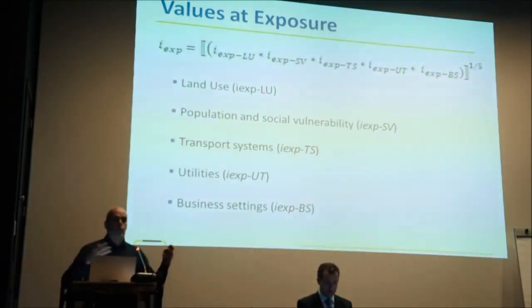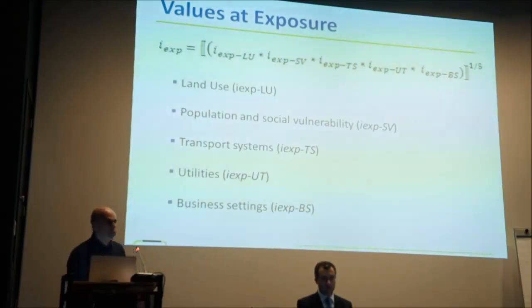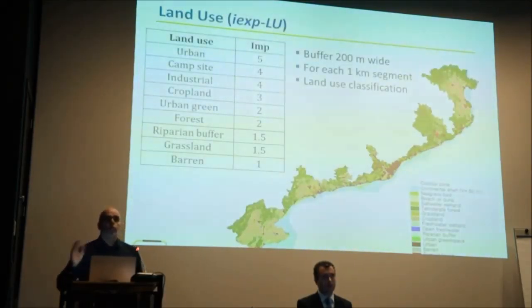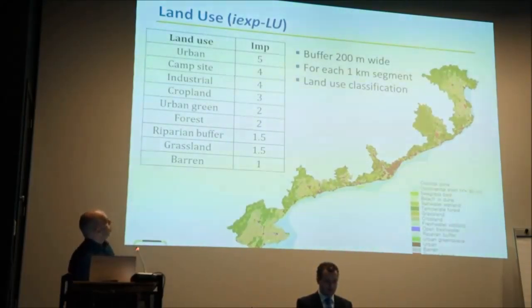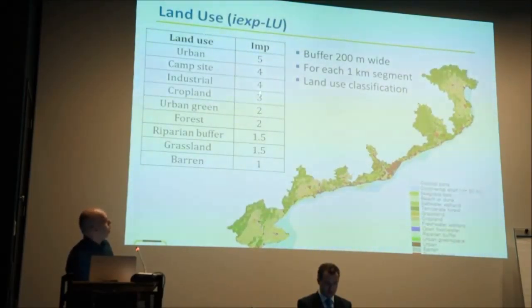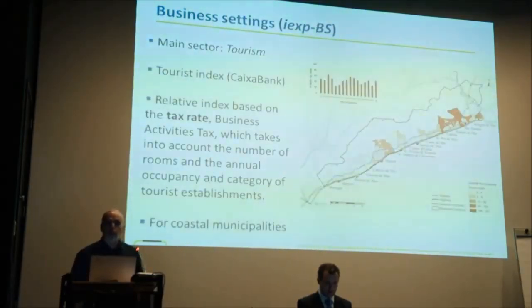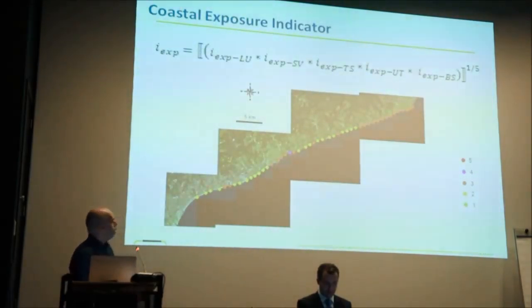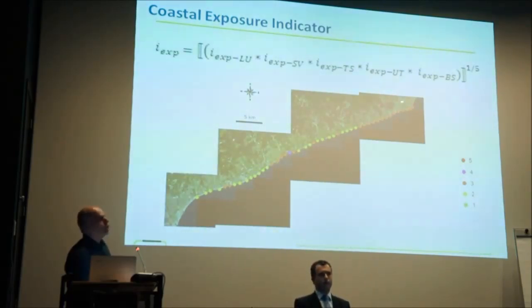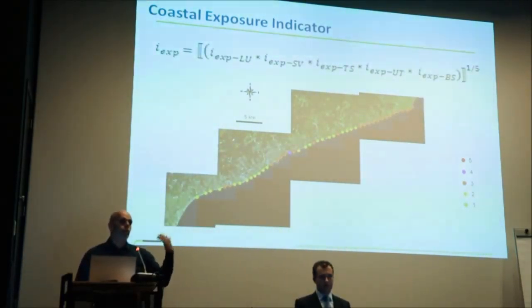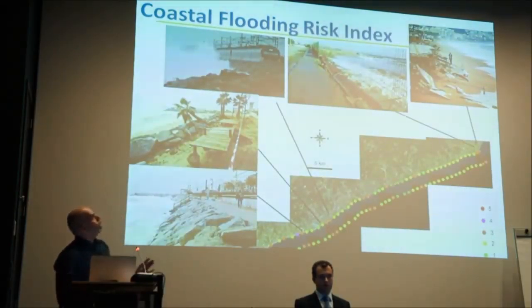To include exposure and combine hazard with exposure to obtain something related to risk, we use five categories: land use, population, transport, utilities, and business. We obtain data for different land uses along the Catalan coast and assign a category for each in terms of importance. The same is done for transport systems — coastal railway and coastal road very close to the shoreline. Within a buffer close to the shoreline, we analyze all five items and obtain an exposure distribution for each sector. Finally, we combine both inundation and erosion with exposure to produce a coastal flooding risk index along the coast for two different return periods.